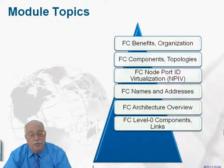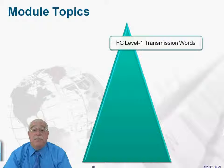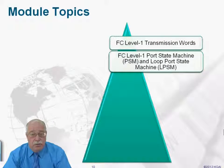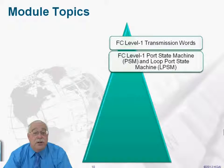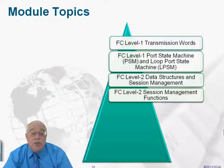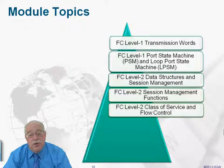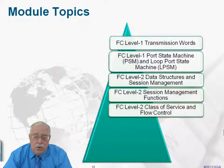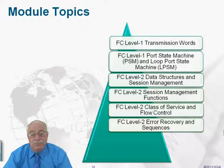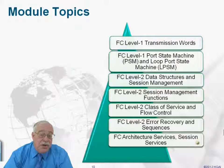We'll take a look at level zero — kind of where the rubber meets the road physically. We'll look at level one, which deals with encoding and scrambling. We'll look at the idea of transmission words and the control that occurs in terms of port state machines and loop port state machines. It's in FC1 we talk about the different topologies. FC2 is the transport function and all the activities that take place in managing the transport of information on behalf of the session that exists between the adapters. The class of service — what some people call quality of service — and flow control, ensuring that nothing gets lost in fiber channel.